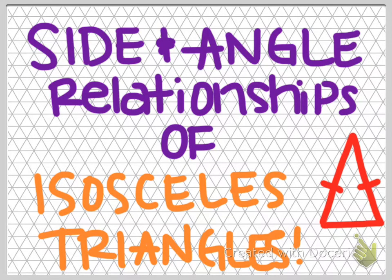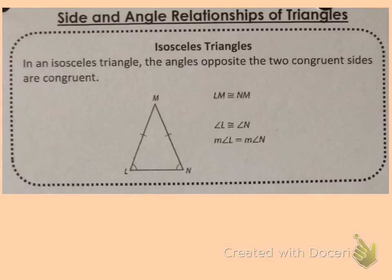Side and angle relationships of isosceles triangles. In an isosceles triangle, the angles opposite the two congruent sides are also congruent.